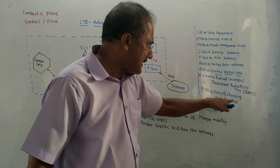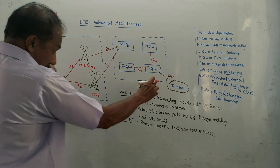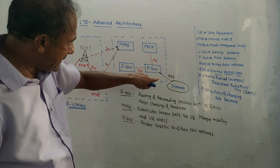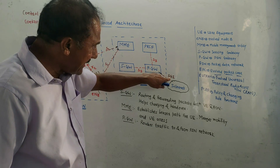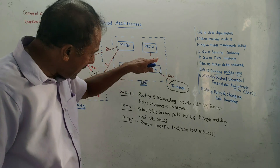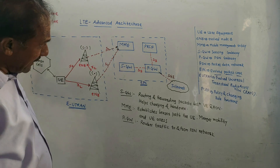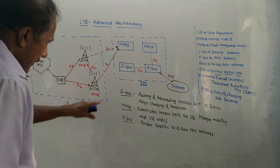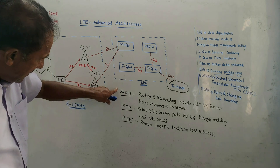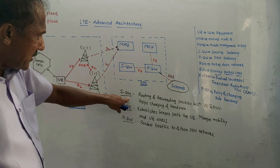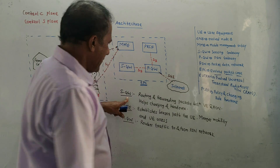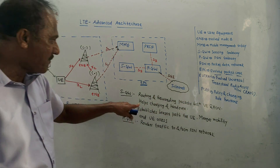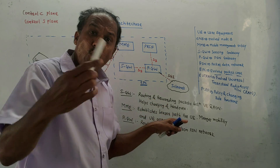An extra thing shown here compared to the normal 4G LTE architecture is the SGi interface. This is the interface used to connect the control C-plane and control S-plane between PGW and the PDN network and internet. SGW, the serving gateway, is used for routing and forwarding packets between UE and the PDN network. It also helps with charging and handover mechanisms.